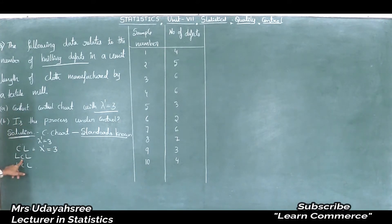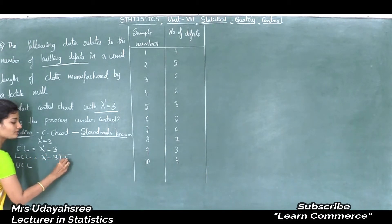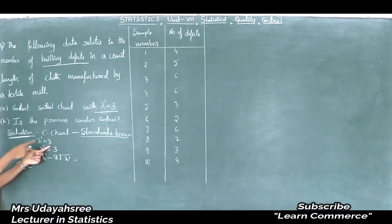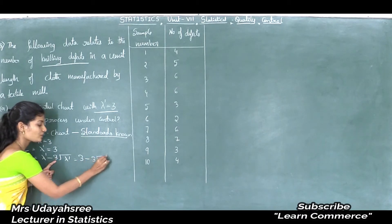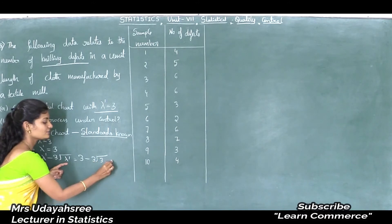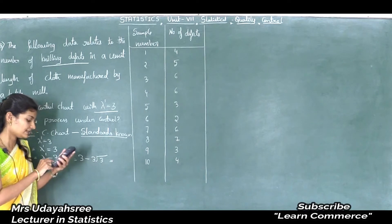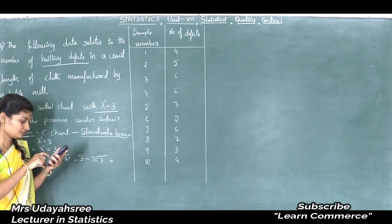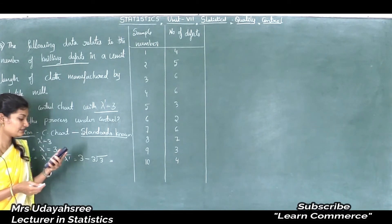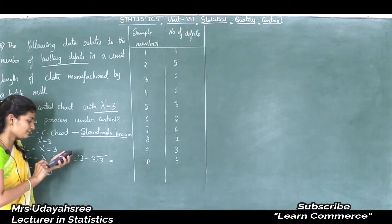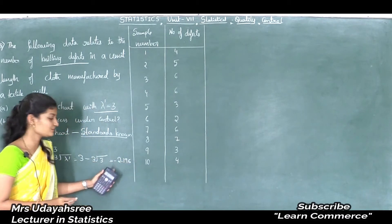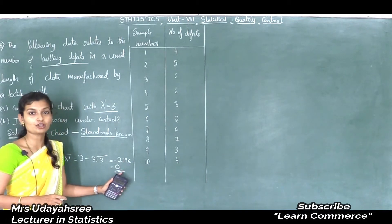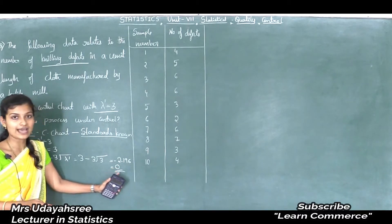To calculate the lower control limit of the C chart in the standards known case, the formula is lambda dash minus 3 into square root of lambda dash. Lambda dash is 3, so this equals 3 minus 3 into square root of 3, which is 3 minus 5.196, giving minus 2.196. Since this is a negative value, it is taken as 0, because the number of defects cannot be negative.